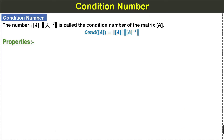The condition number is the product of the norm of a matrix and the norm of its inverse matrix. We write it as: the condition number of the given matrix A is equal to the product of the norm of matrix A and the norm of the inverse of matrix A.